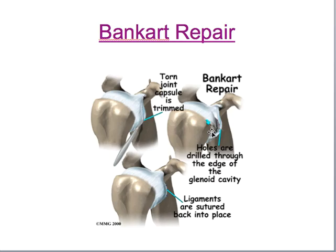In the rehab, external rotation and abduction are going to be limited for a period of time while the tissues heal, but not nearly as long as with an open procedure. You'll start scapula stabilization exercises very early. Normal motion can return anywhere from one to two months, except for external rotation, which is typically limited to 15 degrees of normal as a precautionary guide so the repair doesn't re-rip or over-stretch. If the patient needs plyometric training, that can begin at about three months or 12 weeks post-op.